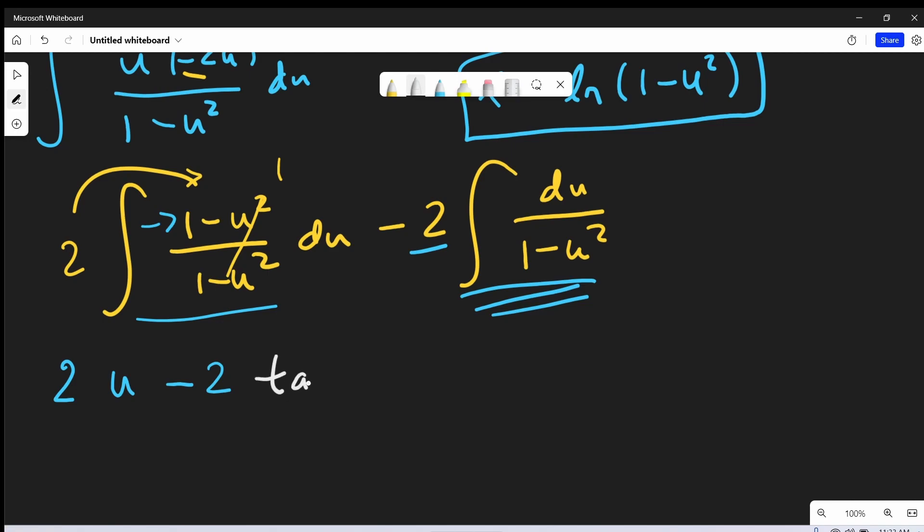So for this part of the solution, I'm going to write this as inverse tanh of u plus c. And now let's just recall that our value of u is square root of 1 minus e to the x. And that's going to allow us to back substitute.